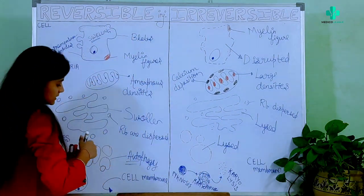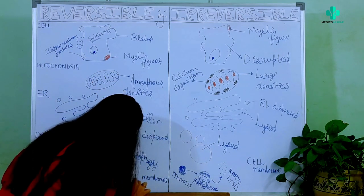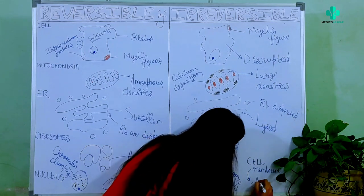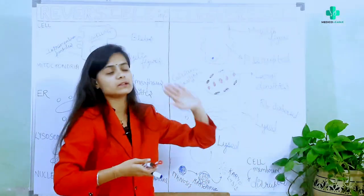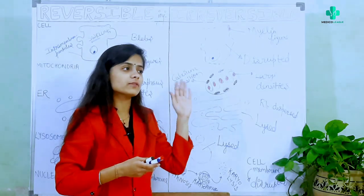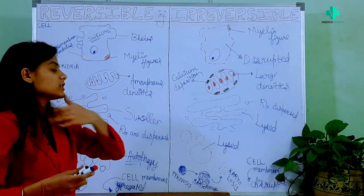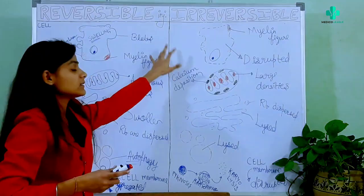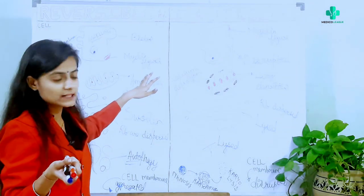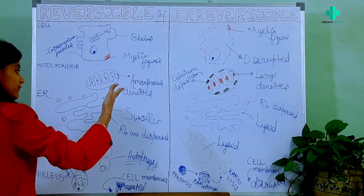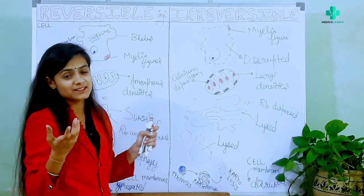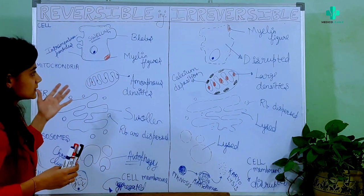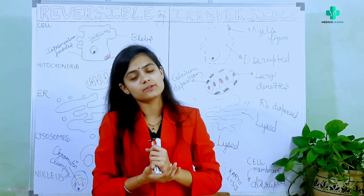The cell membrane in reversible cell injury is aggregated, but in irreversible cell injury it is disrupted. So this was all about the difference between reversible and irreversible injury. This question can be asked very frequently in professional exams. You have to write the definition of both, then the biochemical and molecular mechanisms, then the morphology. I would suggest drawing diagrams to explain the morphology — that way you can get bonus marks and it would be a very good presentation for your examiner.